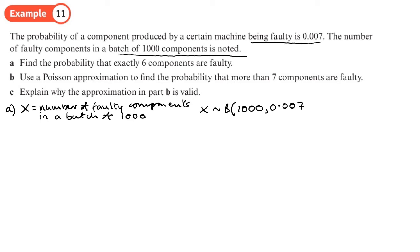This is a calculator job. This is going to be the binomial PD. Variable x is 6, n is a thousand, p is 0.007. That gives us 0.1494 if I round it to four decimal places.